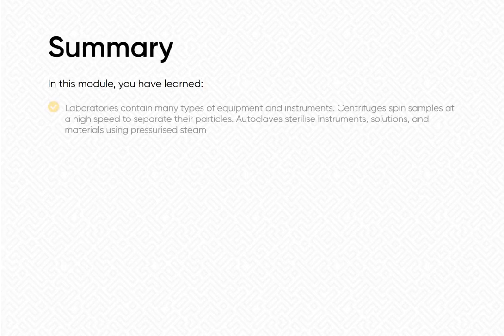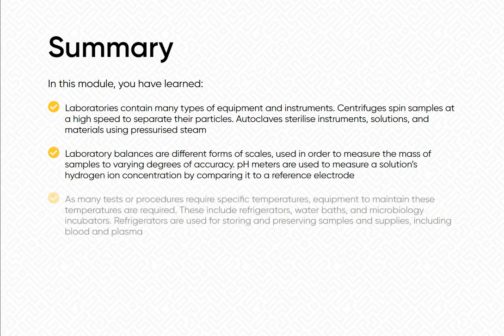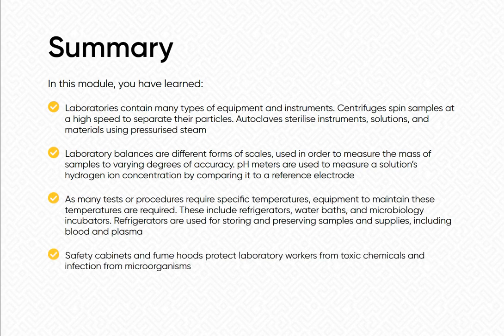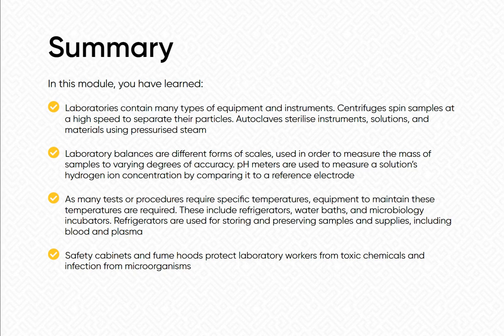Summary: Laboratories contain many types of equipment and instruments. Centrifuges spin samples at high speed to separate their particles. Autoclaves sterilize instruments, solutions, and materials using pressurized steam. Laboratory balances are different forms of scales used to measure the mass of samples to varying degrees of accuracy. pH meters are used to measure a solution's hydrogen ion concentration by comparing it to a reference electrode. Equipment to maintain specific temperatures — such as refrigerators, water baths, and microbiology incubators — is required for many tests. Refrigerators are used for storing and preserving samples and supplies, including blood and plasma. Safety cabinets and fume hoods protect laboratory workers from toxic chemicals and infection from microorganisms.